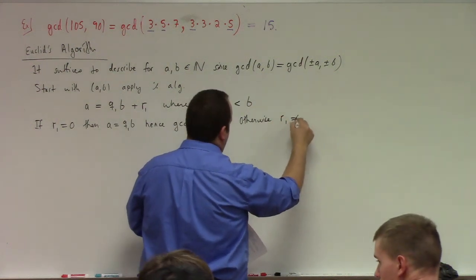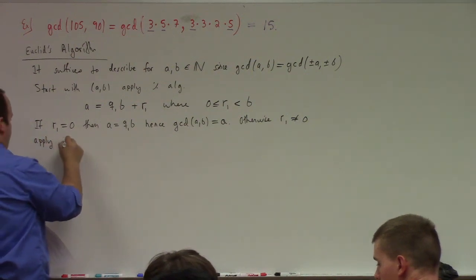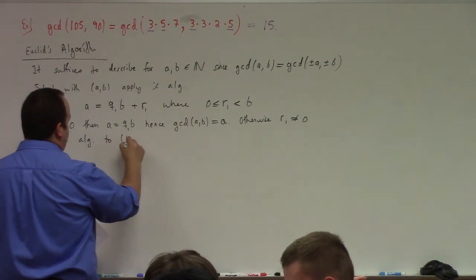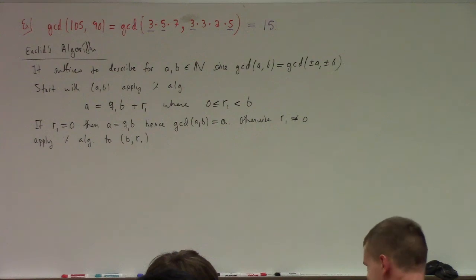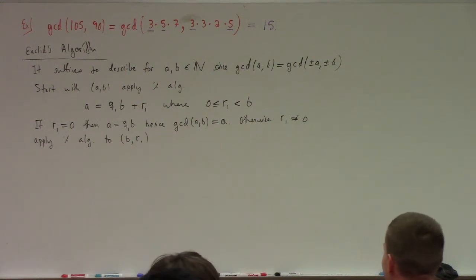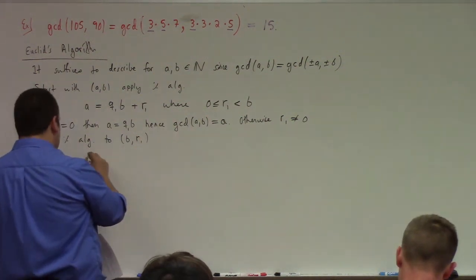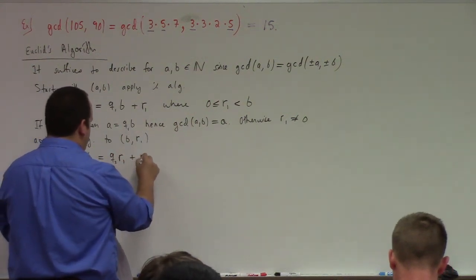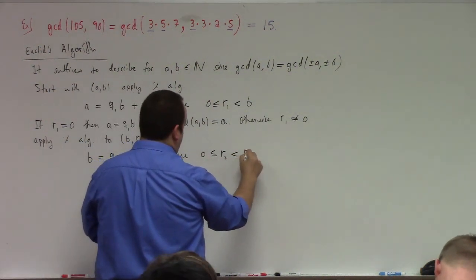Otherwise, R₁ is not equal to zero. We can apply the division algorithm to b and R₁ — so R₁ is now playing the role b did in the last step. We apply the division algorithm: b is equal to Q₂ times R₁ plus R₂, where 0 ≤ R₂ < R₁.